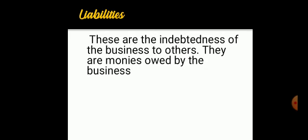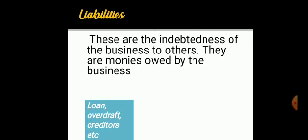Now let's go to liabilities. These are the indebtedness of the business to others — simply put, the business is owing others. For instance, if the business bought 50 cartons of noodles and has not paid, the business is owing for those 50 cartons — that is a liability. Or if the business obtained a loan from the bank, the business is owing the bank — that is a liability. Examples include your loan, overdraft, and creditors.